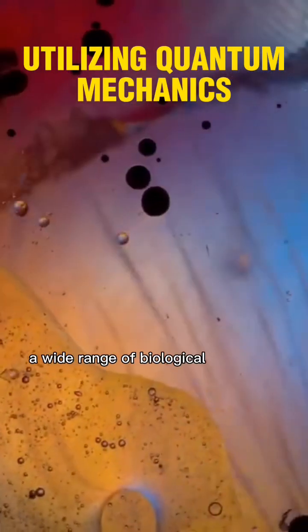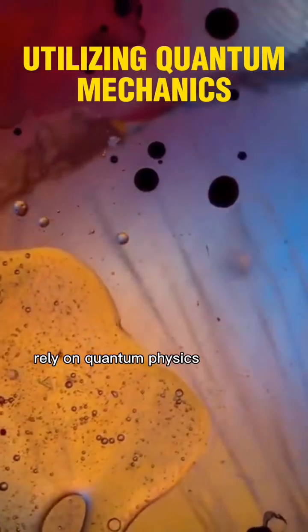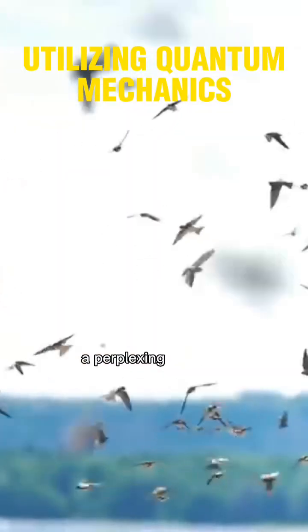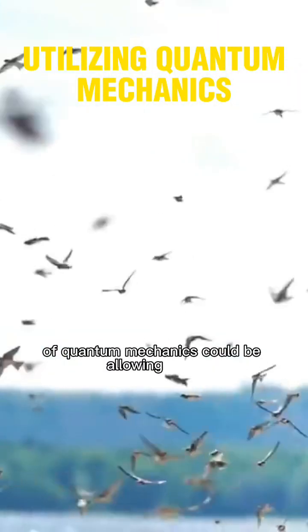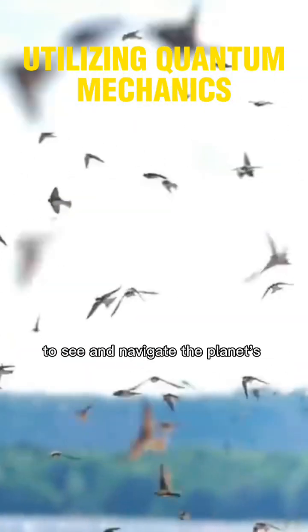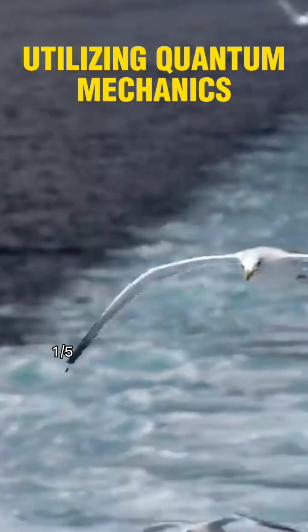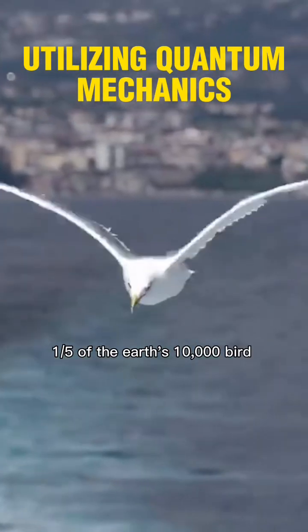A wide range of biological processes rely on quantum physics to operate. A perplexing property of quantum mechanics could be allowing birds to see and navigate the planet's magnetic fields. One-fifth of the Earth's 10,000 bird species